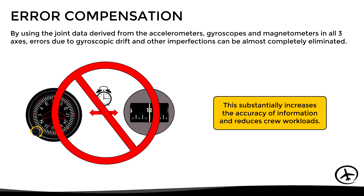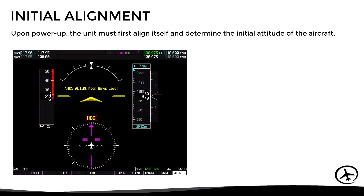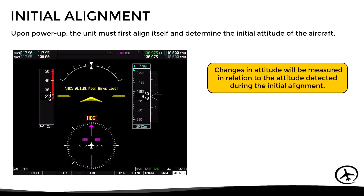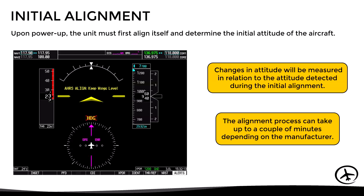In order for the AHRS sensors to function properly, an initial alignment is required. The purpose of this initial alignment is to determine the attitude of the aircraft when it is on the ground, since changes in attitude will be measured relative to the attitude detected during this initial alignment. This process normally takes a few seconds, but can take up to a couple of minutes depending on the manufacturer. An important consideration is that the aircraft must remain stationary on a level surface so that the initial reference attitude is as accurate as possible. This alignment is required only upon power up.